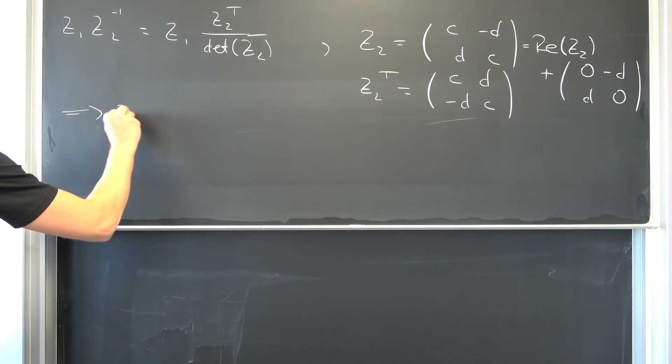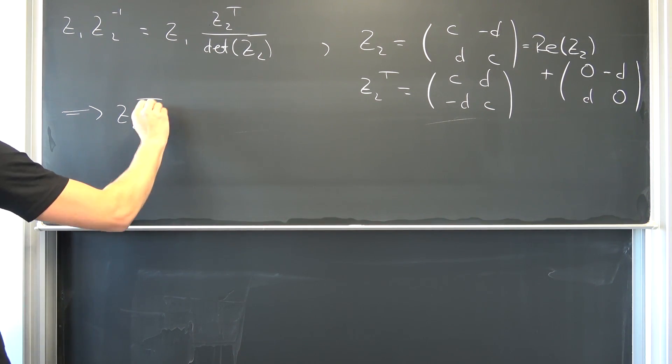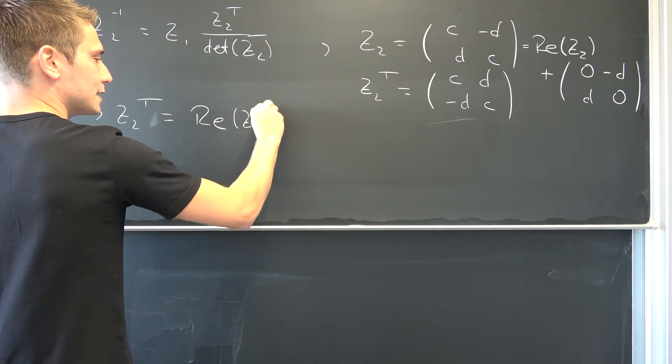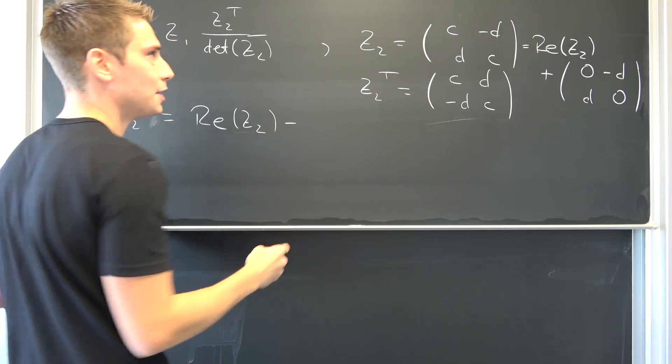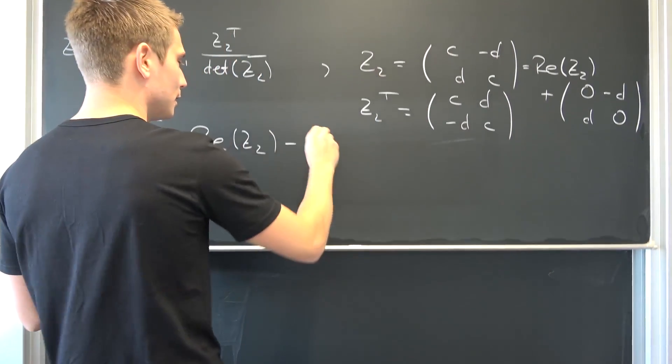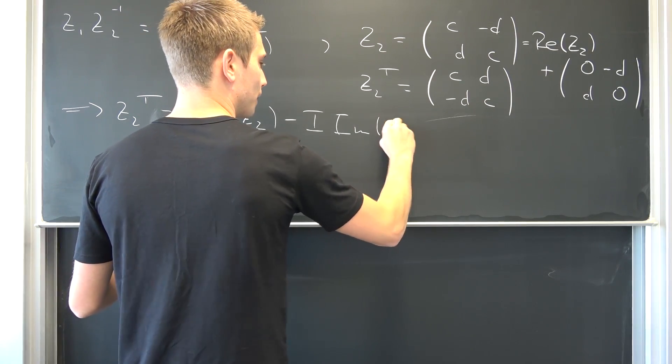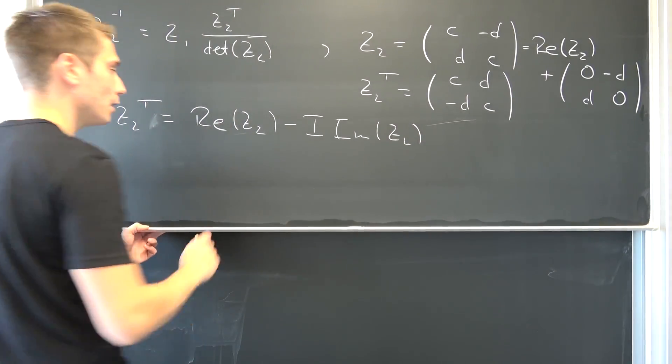Meaning in conclusion, z2 transpose is thus nothing but the real part of z2 minus the imaginary part times i of z2.